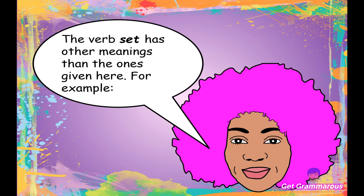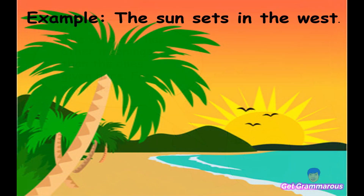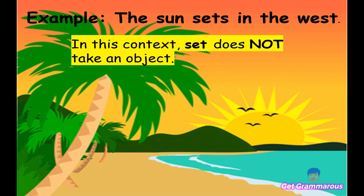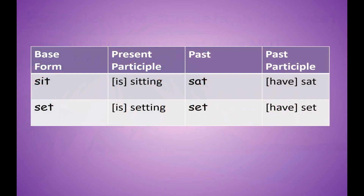The verb 'set' has other meanings. For example, the sun sets in the west — in this context, 'set' does not take an object. To summarize: sit, sat, have sat seldom takes an object, whereas set, set, have set generally takes an object.